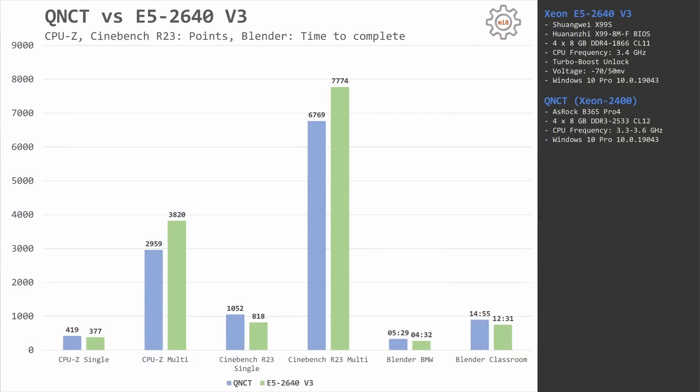Before the gaming tests, let's quickly look at some synthetic benchmarks. As expected, the Xeon E5-2640 V3, which has two extra CPU cores, is slightly faster in multi-core workloads. Still, it is interesting to see that QNCT with only six cores is not that far behind. QNCT, which has slightly better IPC and slightly higher single-core clock frequency, overtakes the Xeon E5 in single-core operations. Overall both CPUs are about the same, but strictly speaking the Xeon E5-2640 V3 will be the better choice for a workstation.